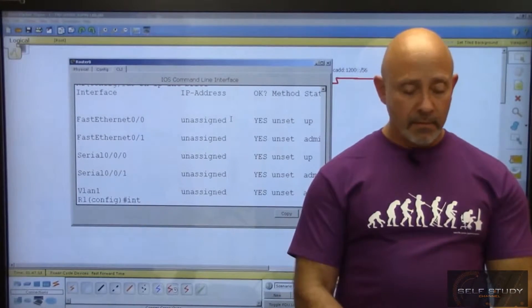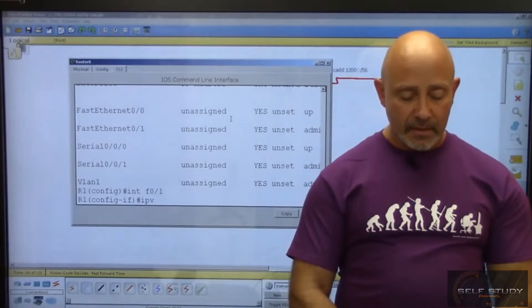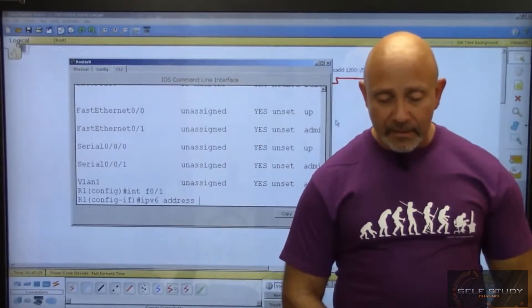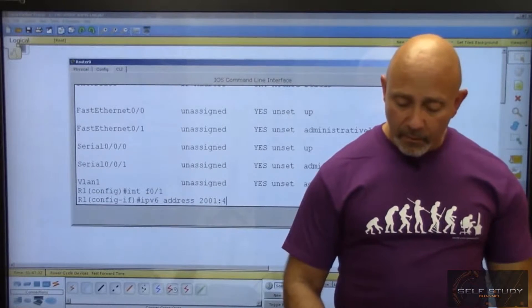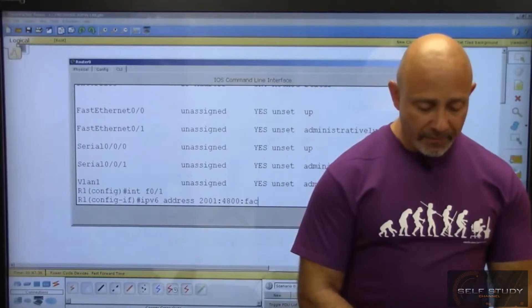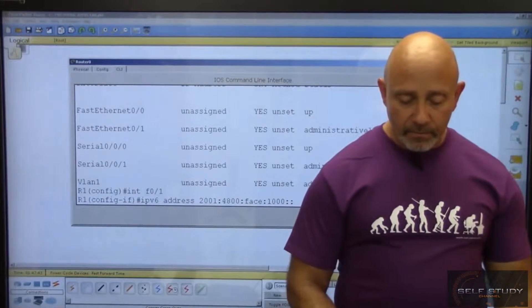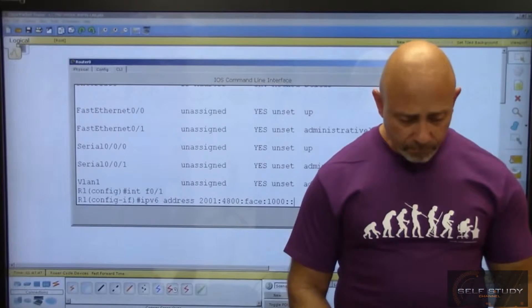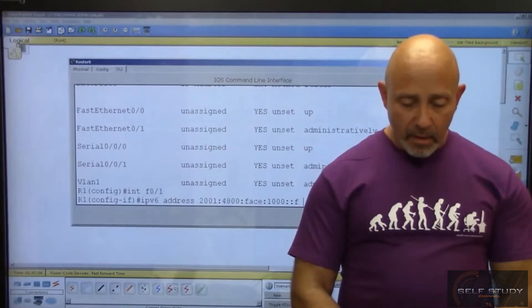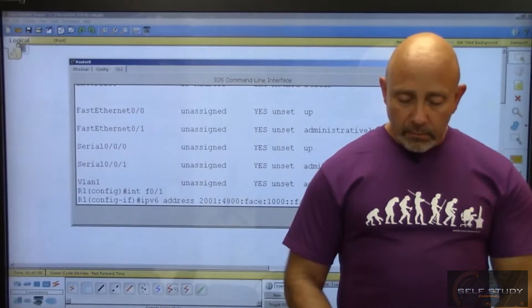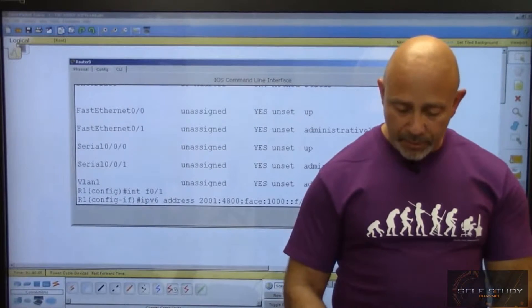So I'm going to go int F0/1, enter. In order to put an IPv6 address, I go IPv6 address, let me expand it since this is a long address. It's going to be 2001, global right, 4800, that's my provider, I am part of Facebook ha ha, well now, just 1000 here for my subnet, colon colon F. Let's put a /56 and then we're going to do EUI-64.